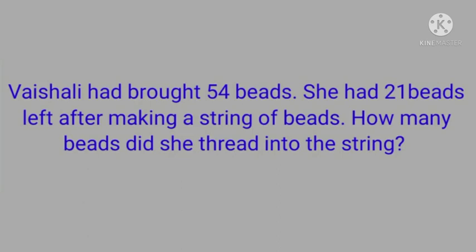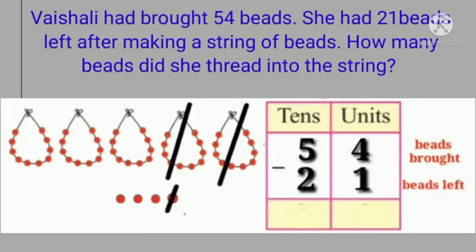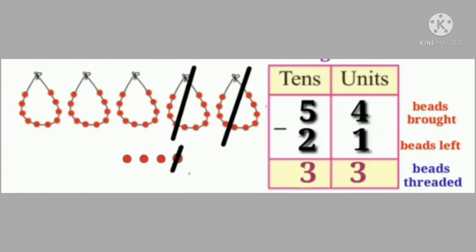What must be done here children? Yes, correct — subtraction. So let us solve the example. Beads brought: 54. Beads left: 21. We will subtract 21 from 54. Remember, always start subtracting from the unit column first. So 4 minus 1 is equal to how much? Yes, 4 minus 1 is equal to 3.